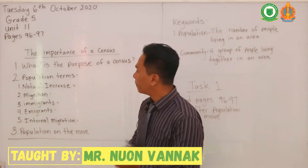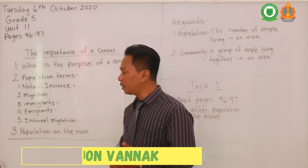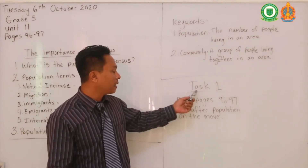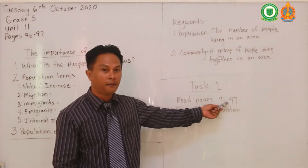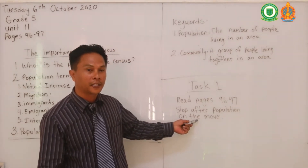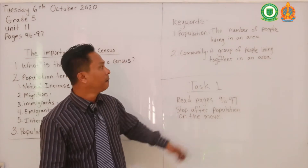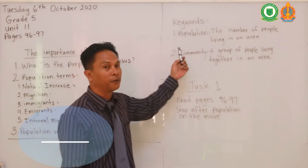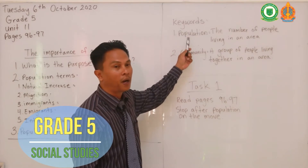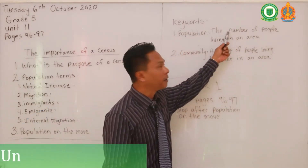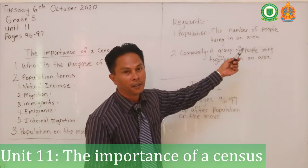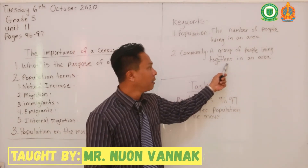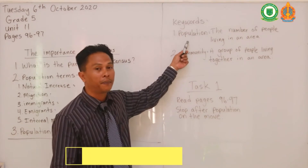Before I explain all these in video two, I'd like you to read pages 96 to 97 and stop after the 'Population on the Move' section. These are some key words you'll want to know before you read. Number one: population — population is the number of people living in an area. Don't get it confused with community — community is a group of people living together in an area.